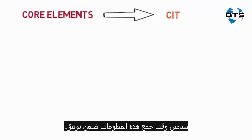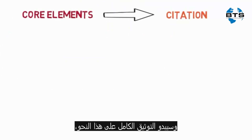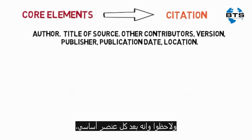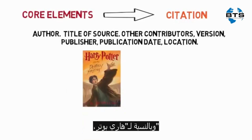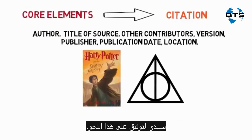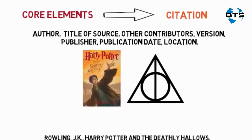After you have listed your core elements, it is time to compile them into a citation. A complete citation may look like the following. Notice that after each core element, there is either a period or a comma. For Harry Potter and the Deathly Hallows, our citation may look something like this.